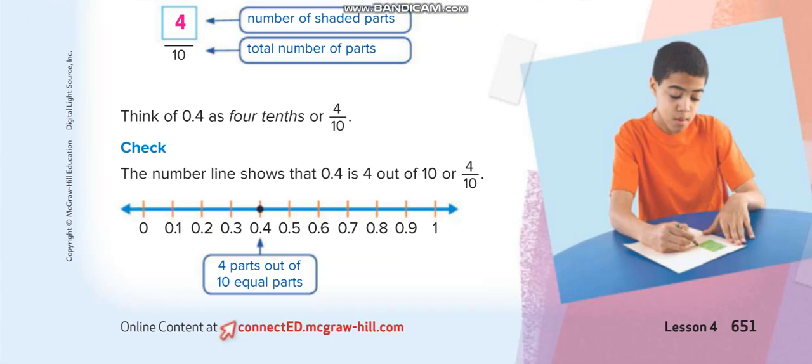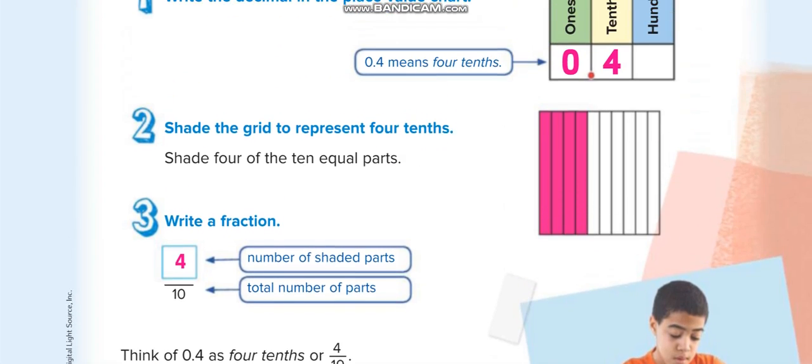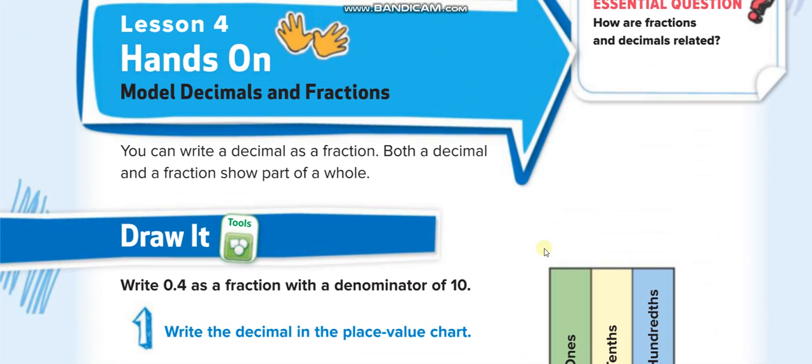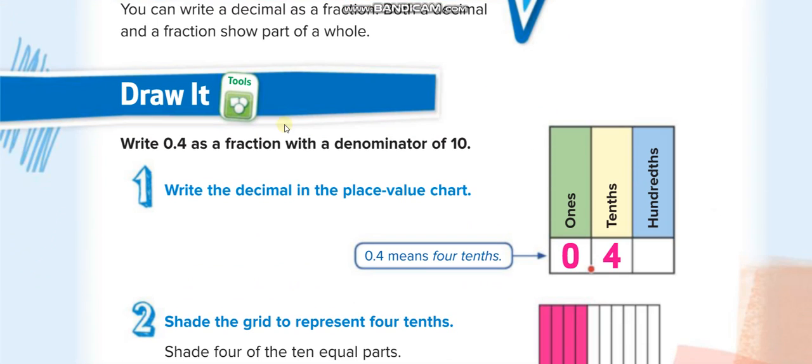In this lesson we will model the fractions. Here, write 0.4 as a fraction with a denominator of 10. They want you to write 0.4. Now you know that the place value of the 4 is tenths, so the denominator of course will be 4 over 10.